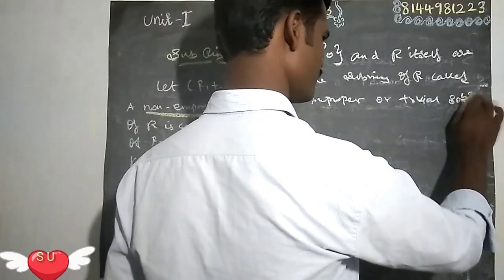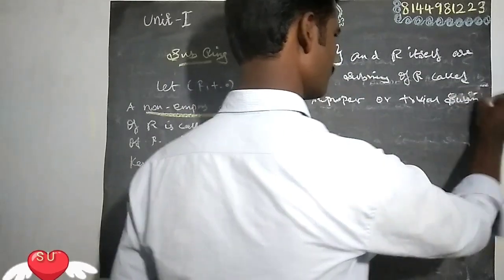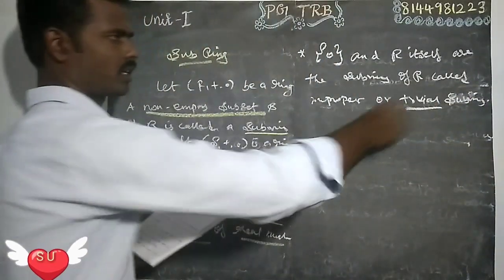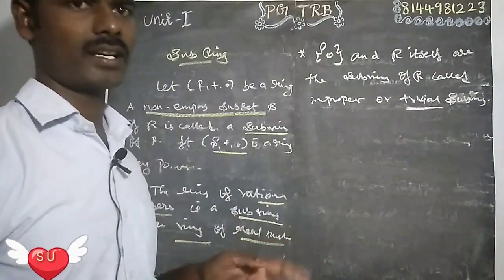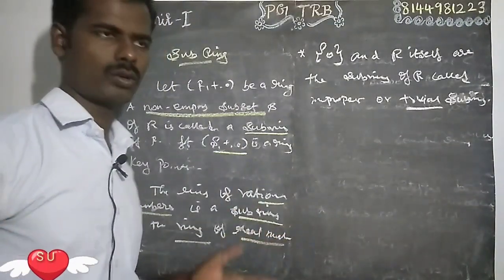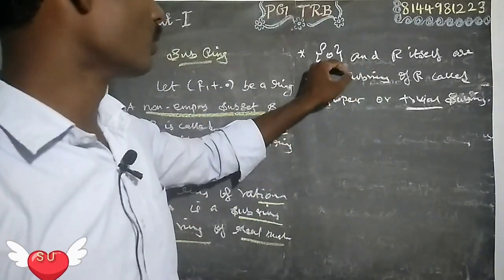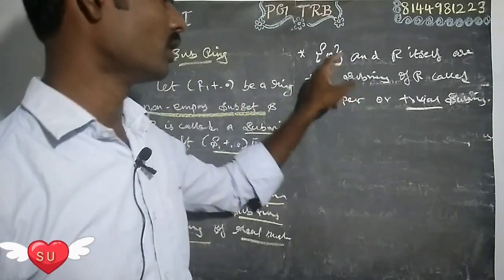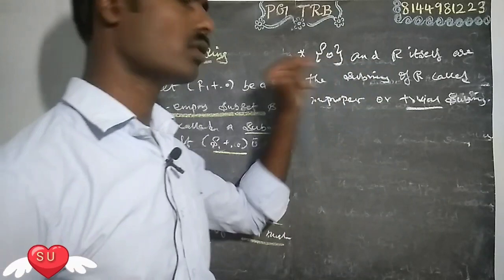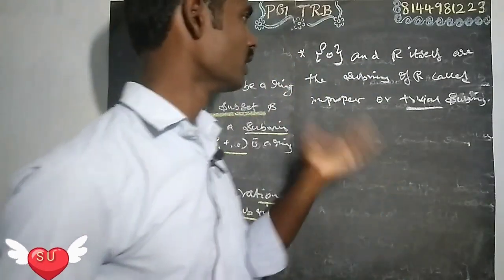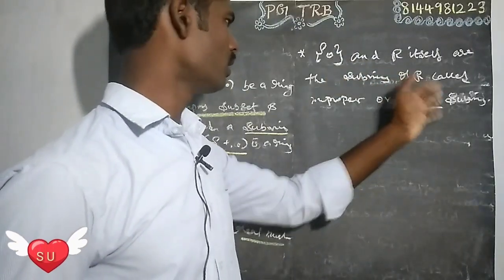So trivial subring — the trivial condition means zero. Trivial means {0}. So the trivial subring is {0}, and R itself is also called an improper or trivial subring of R.